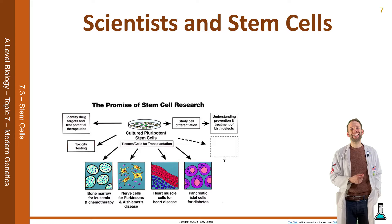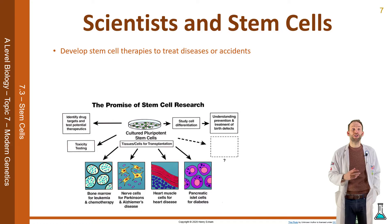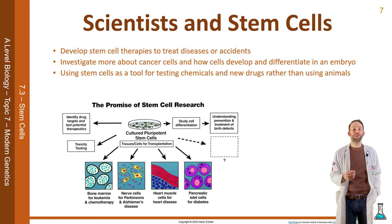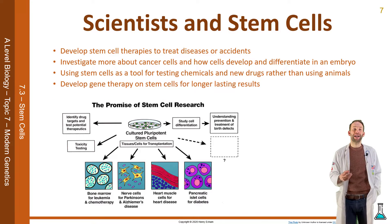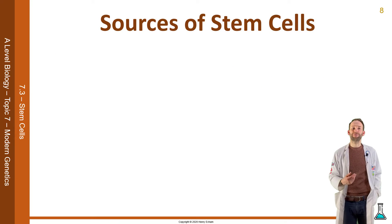Scientists are particularly interested in stem cells due to their ability to be turned into other types of cells. They want to develop stem cell therapies to treat diseases or accidents, to investigate cancer cells and how cells develop and differentiate in an embryo. They can use stem cells to test chemicals and new drugs rather than using animals, and they can develop gene therapy on stem cells for longer lasting results.